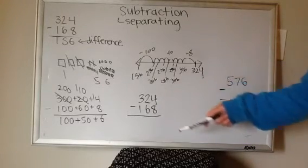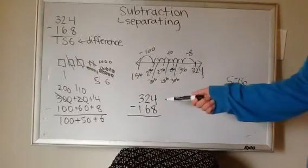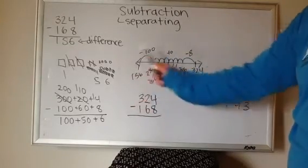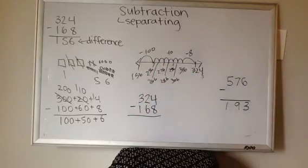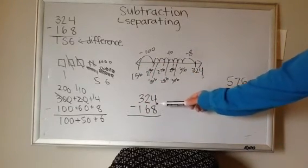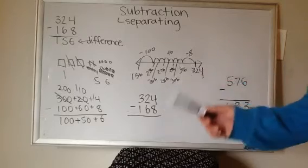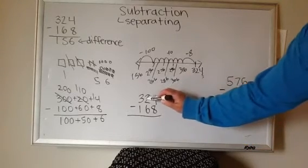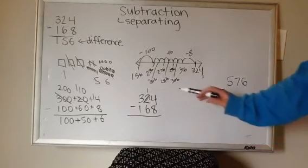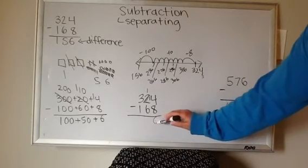Lastly, the standard algorithm, the way that a lot of us want to be doing, but it's best to come to this after you understand what's actually happening with the numbers. So again, I'm going to start in that ones place, four minus eight. Well, I know that I can't flop the numbers around. I know I need more ones. So two becomes one. So four can become 14.